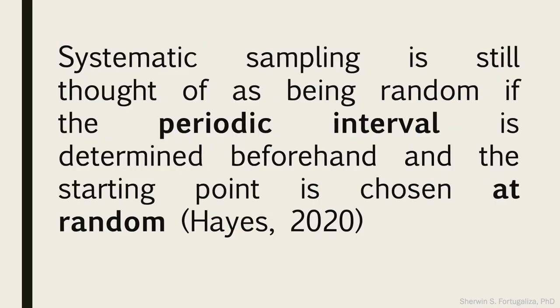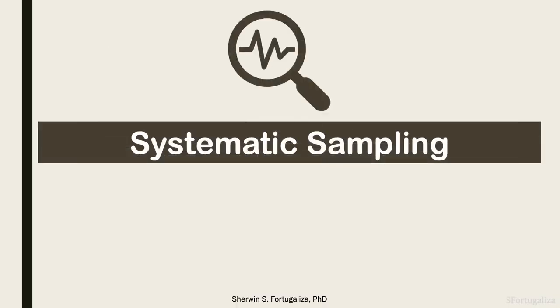According to HACE 2020, systematic sampling is still considered random if the periodic interval is determined beforehand and the starting point is chosen at random. Today, we learned systematic sampling.